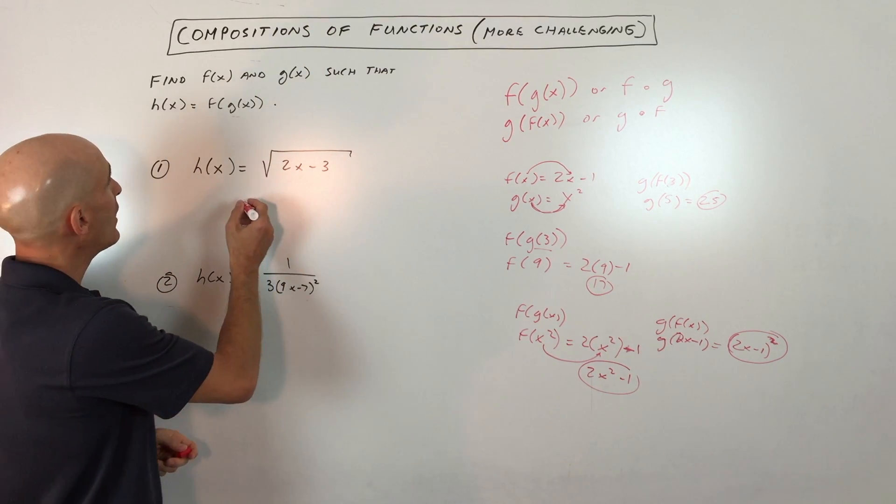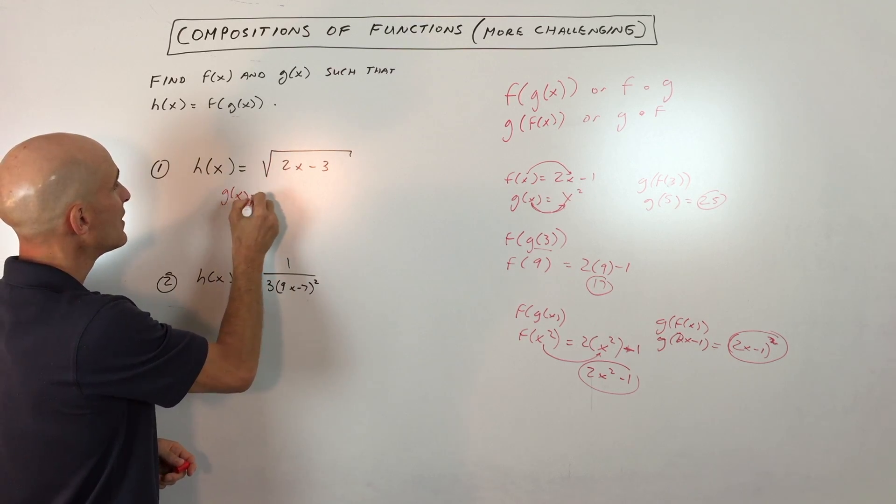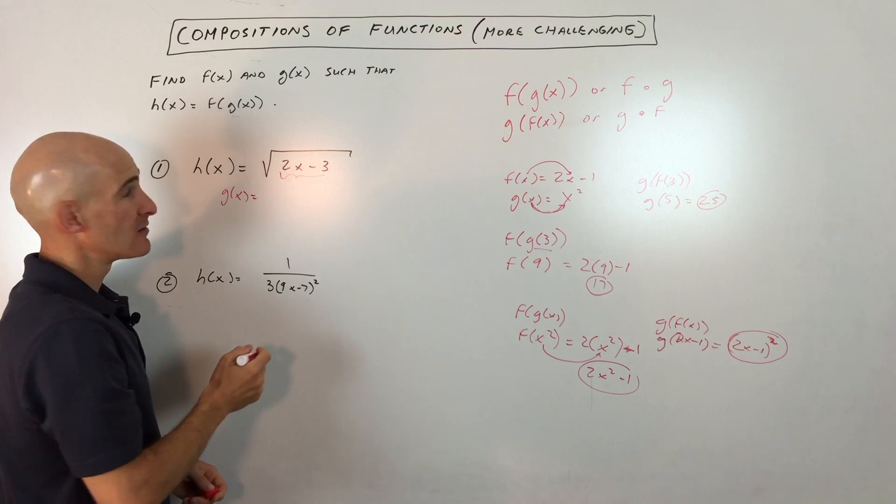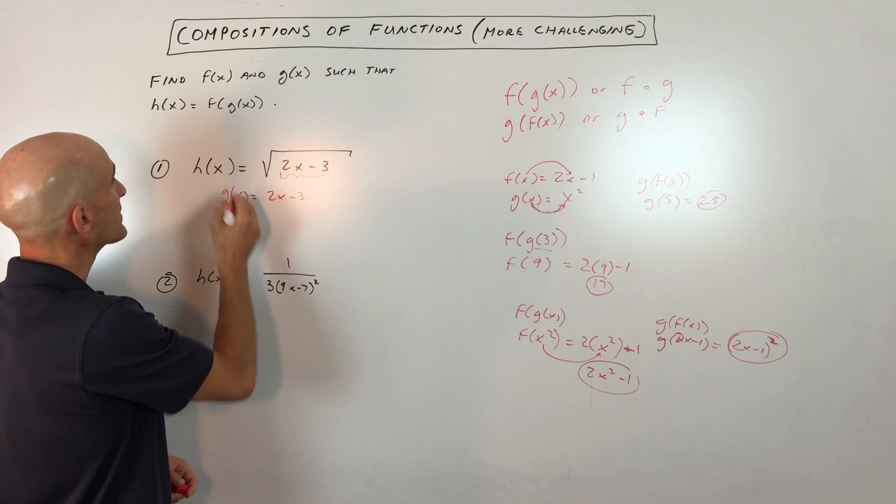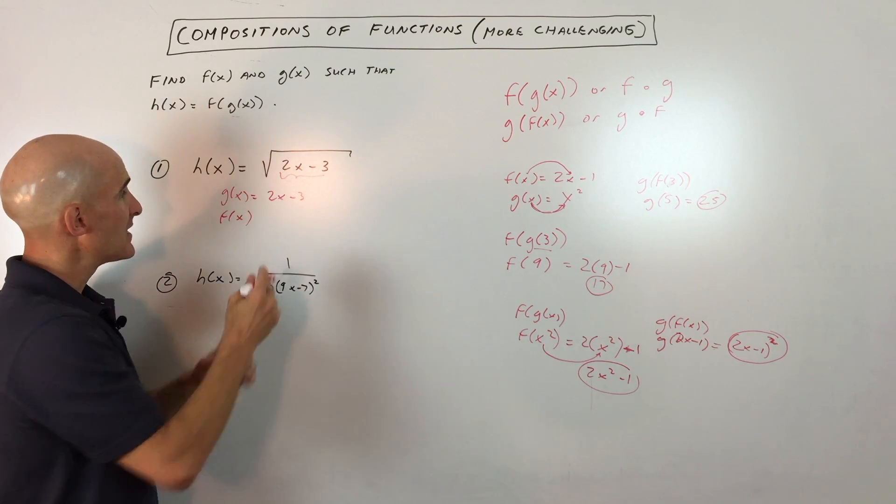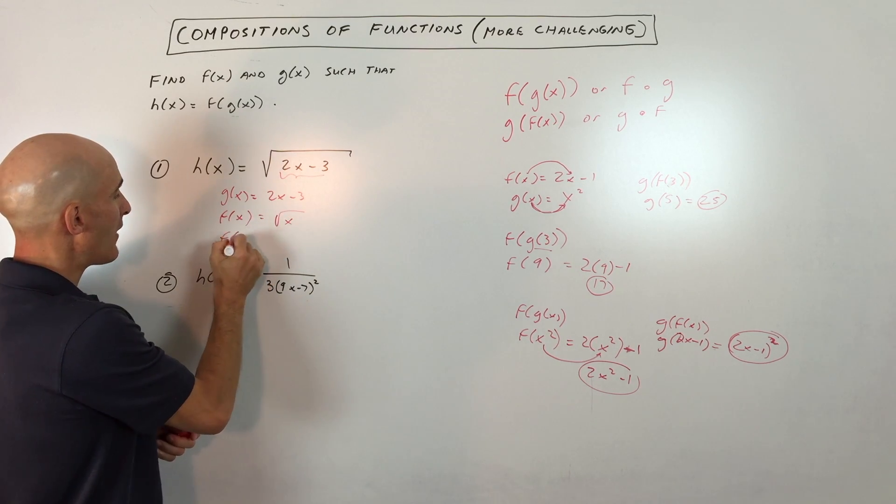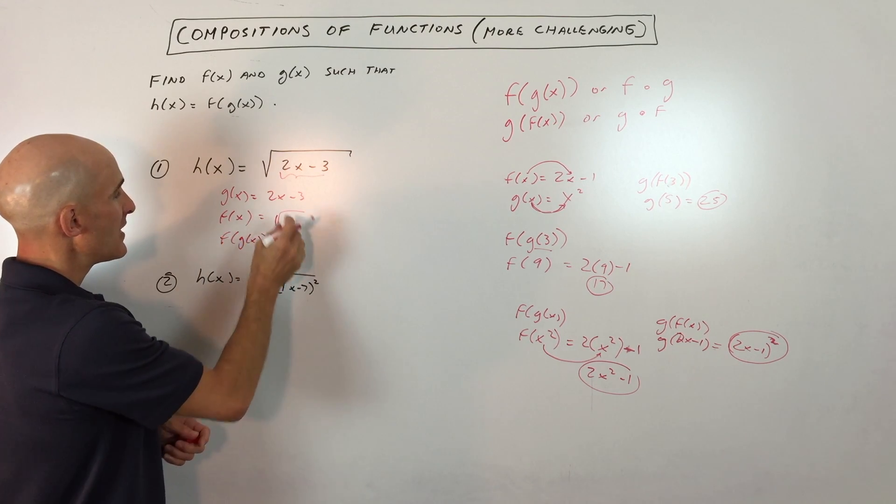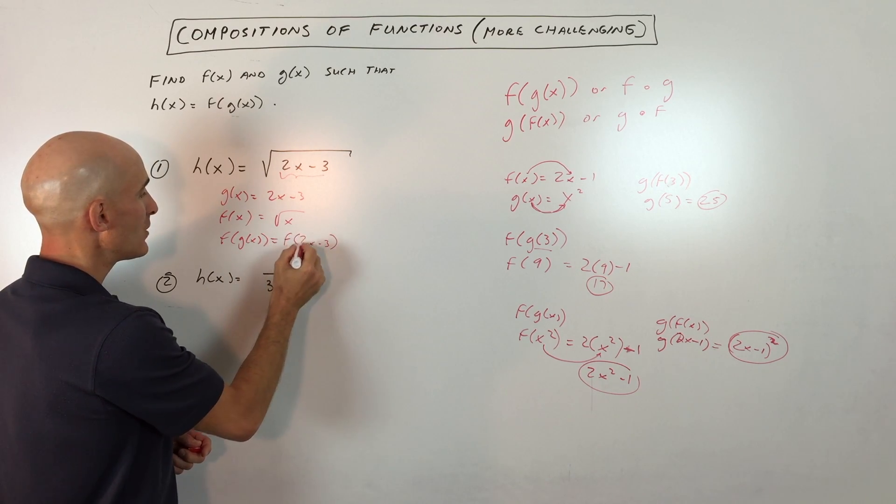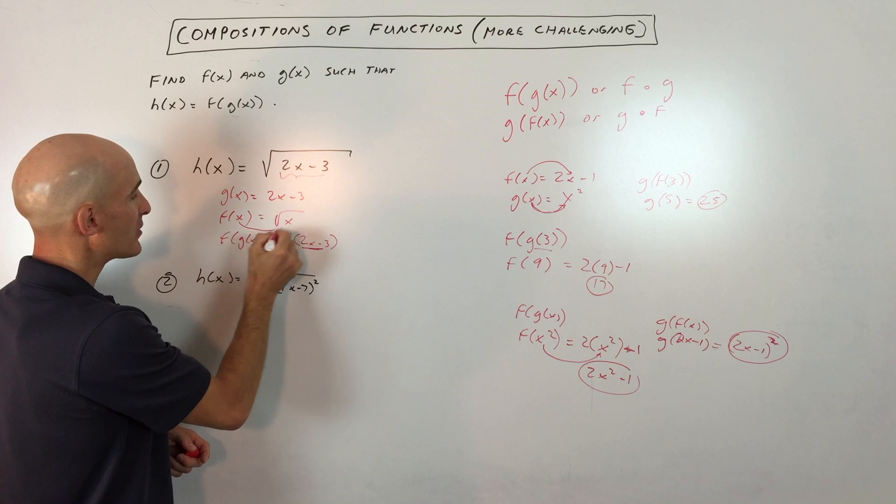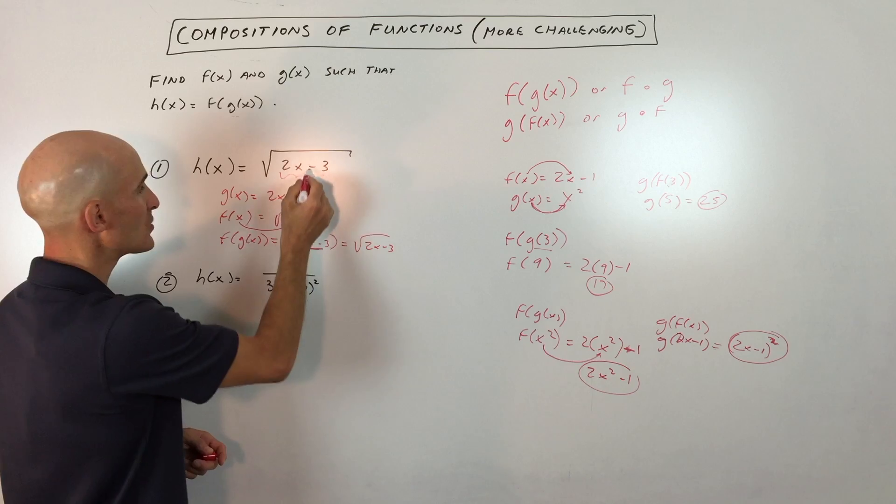For example, one option for f(g(x)) is to say g(x) equals the inner part of this square root, so g(x) = 2x - 3, and f(x), which we do second, is the outer part, which is just the square root. When we do f(g(x)), we're taking g(x) = 2x - 3 and putting it into our f function in place of x, so that becomes √(2x - 3).